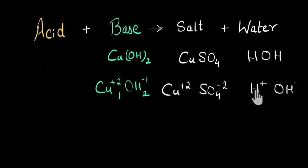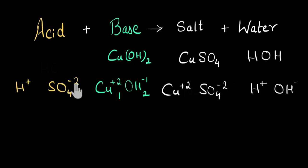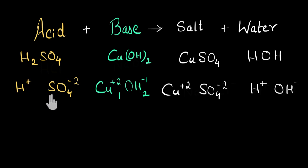Now H⁺ gets attracted to the sulfate ion SO₄²⁻, giving us the ions of an acid. H⁺ has a charge of +1 and SO₄²⁻ has a charge of −2, so we need two H⁺ ions for electrical neutrality. The final formula of the acid is H₂SO₄. You can also get this by cross-exchanging the charges. So H₂SO₄ is the acid and Cu(OH)₂ is the base. When they react, they give copper sulfate salt and water. We have solved the problem.